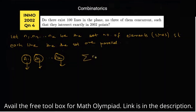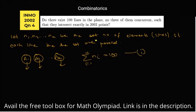We are given that the summation of ni, for i from 1 to k, equals 100 — meaning the total number of lines is 100. Also, the number of intersection points equals 2002.